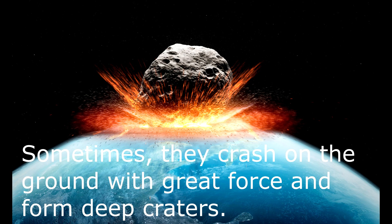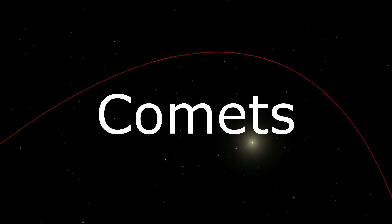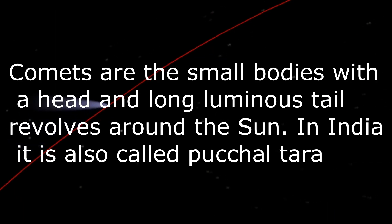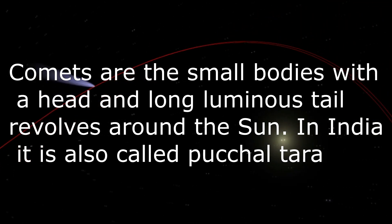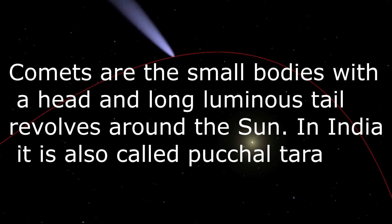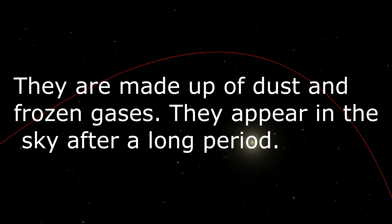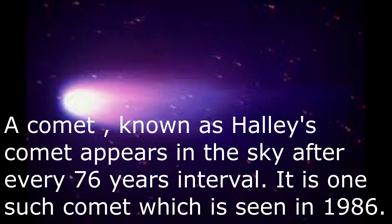Sometimes they crash on the ground with a great force and form deep craters. Now about comets. Comets are small bodies with a head and a long luminous tail, which revolve around the sun. In India they are also called Puchal Tara. They are made up of dust and frozen gases and appear in the sky after a long period. A comet known as Halley's Comet appears in the sky after every 76 years. It is one such comet which was seen in 1986.